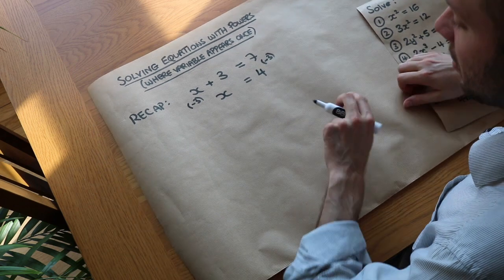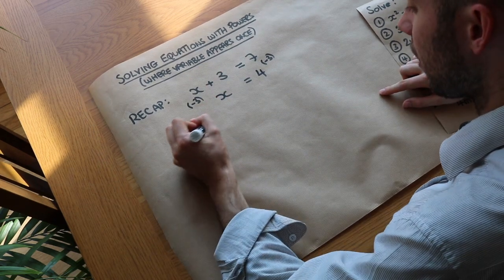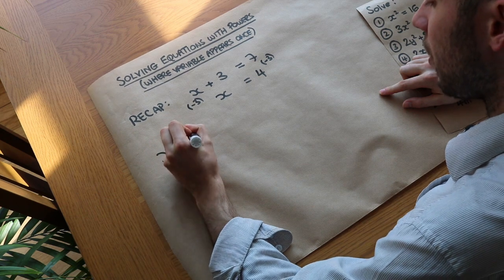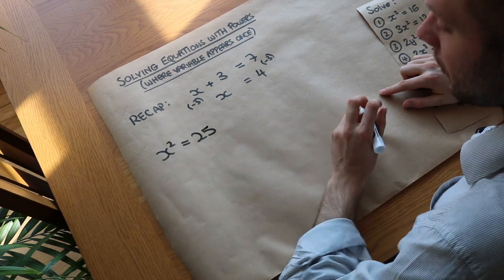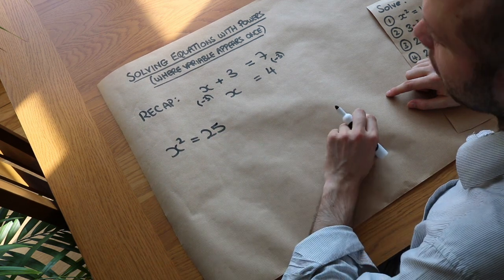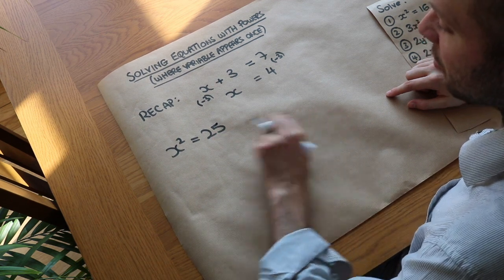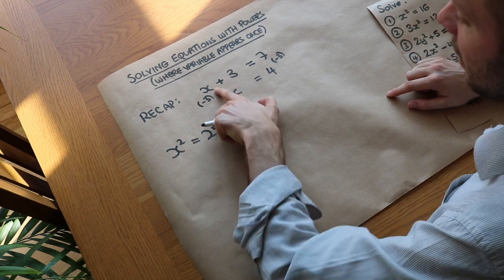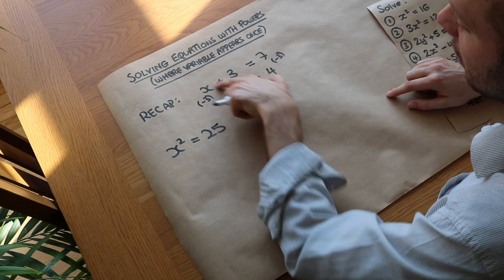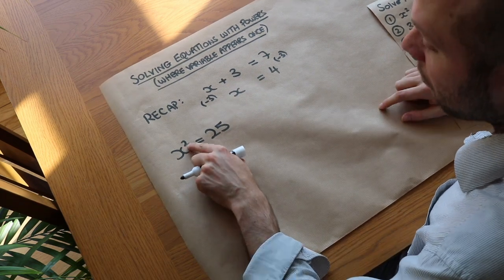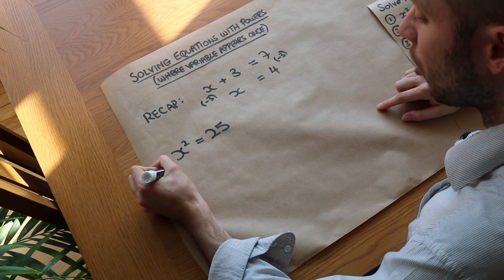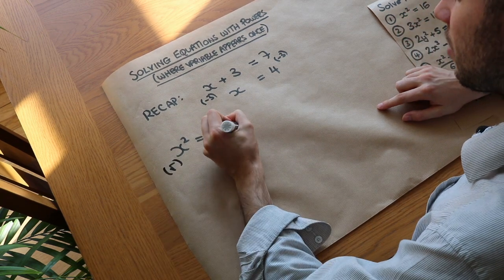That example illustrates how to approach this next one. If we have x squared equals 25, you might think: what number squared gives you 25? But we can also think of it as trying to get rid of that squared. We want x on its own, so we do the opposite of squaring — we square root both sides. The opposite of squaring is square rooting.